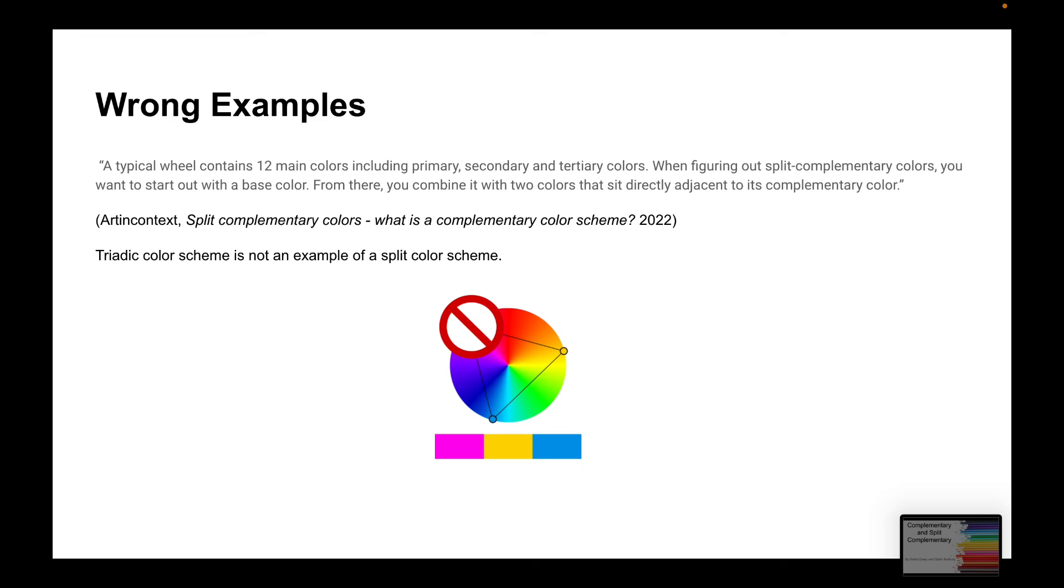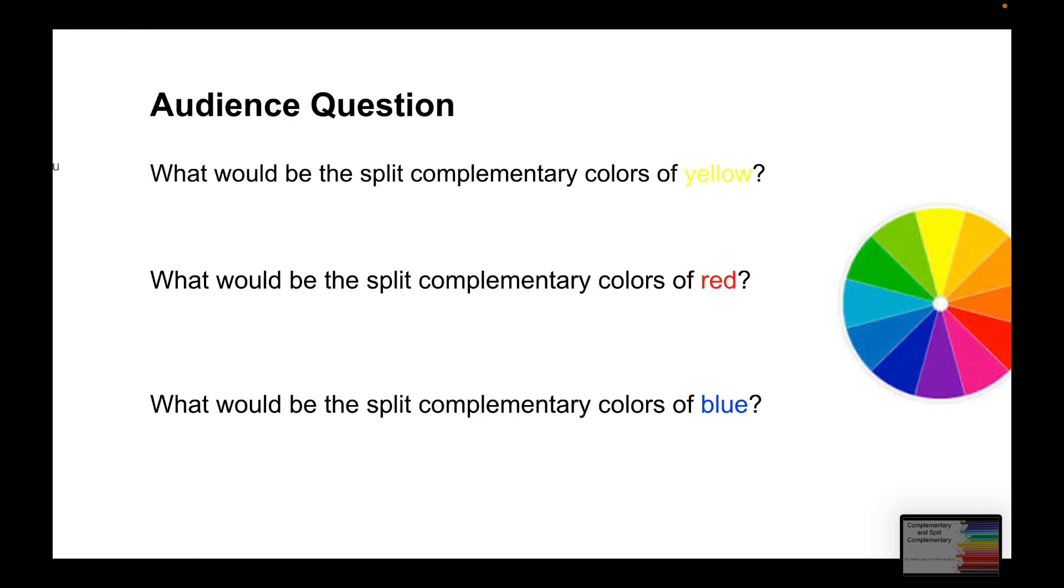So, here's some wrong examples. We've got the triadic color scheme, which is pink and yellow and blue, which is not a split complementary because we would be needing to use the two to the left and the right of a complementary color.